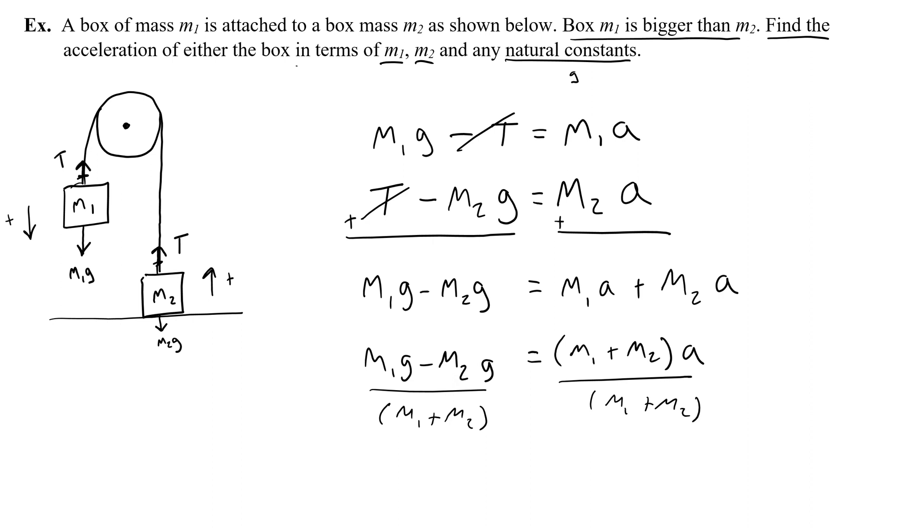Doing this allows me to cancel that out. And here I have an equation for A and the only terms in that equation are m1, m2, and then G, which is a natural constant. So guess what? That is a final answer. This would give you all of the points on the free response question for the AP test.